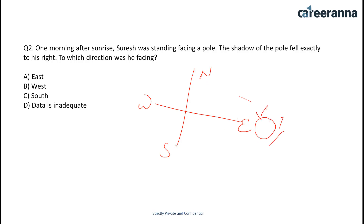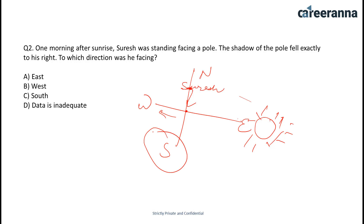The Sun is rising in the east direction. Suppose there is a pole, and the shadow will fall in the west direction. This shadow direction is to the right of Suresh, so Suresh must be watching in the south direction. Option C becomes our answer.